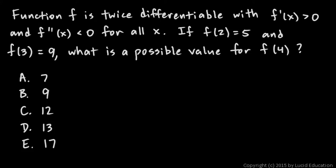Function f is twice differentiable with f prime (the first derivative) greater than 0 and f double prime (the second derivative) less than 0 for all real numbers x. If f of 2 is equal to 5 and f of 3 is equal to 9, what is the possible value for f of 4?